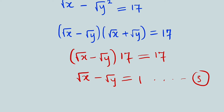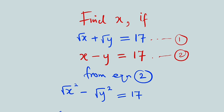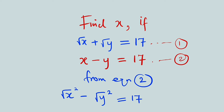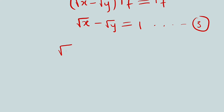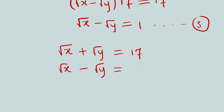We can use equation 3 and solve it together with equation 1. Equation 1 is square root of x plus square root of y equal to 17, and equation 3 is square root of x minus square root of y equal to 1. So let's solve them simultaneously to find the values of x and y.